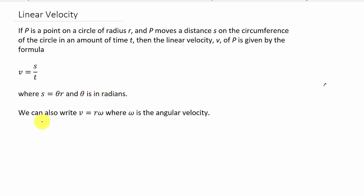And also to find the linear velocity, we can write the linear velocity v is equal to r times omega and omega is the angular velocity. So if you know the angular velocity and the radius, just plug it in there and that will give you the linear velocity also.